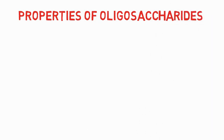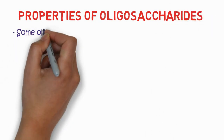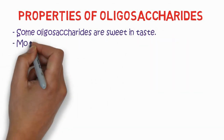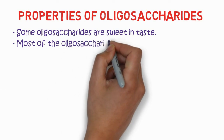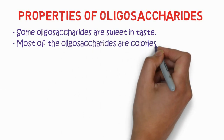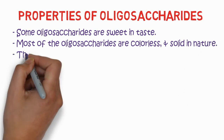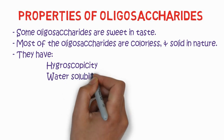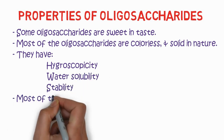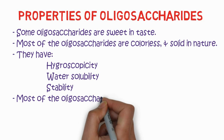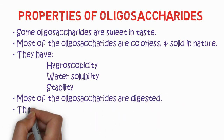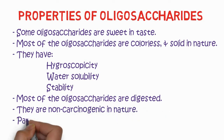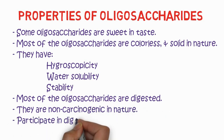Regarding the properties of oligosaccharides: some are sweet in taste; most are colorless and solid in nature. They have properties including hygroscopicity, water solubility, and high stability. Most oligosaccharides are digestible. They are non-cariogenic in nature, so they are safe to eat.